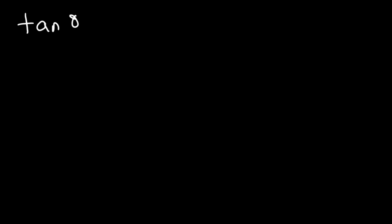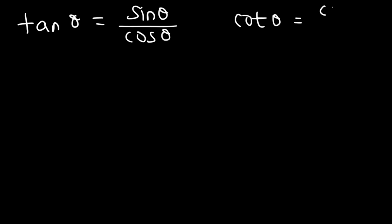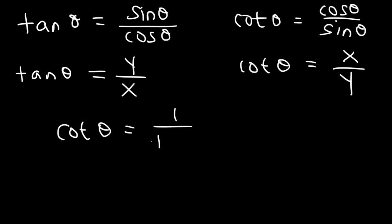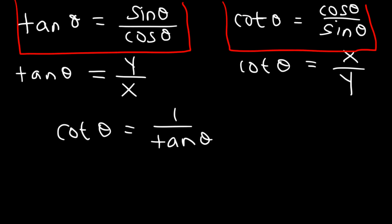Now let's talk about quotient identities. You need to know that tangent theta is equal to sine divided by cosine, and cotangent theta is equal to cosine over sine. Keep in mind tangent is also y divided by x and cotangent is x over y. Using the reciprocal identities, cotangent is 1 divided by tangent. These two are known as the quotient identities. When you hear the word quotient, think of division — you're dividing two things.